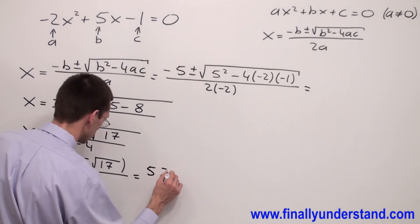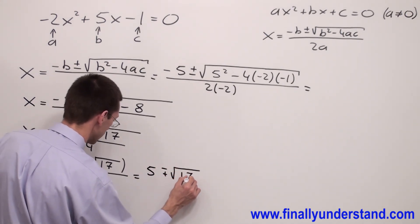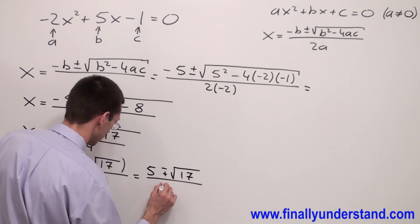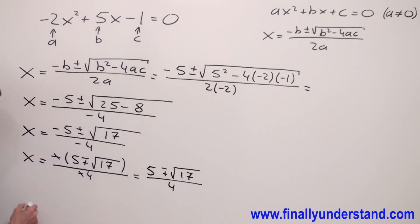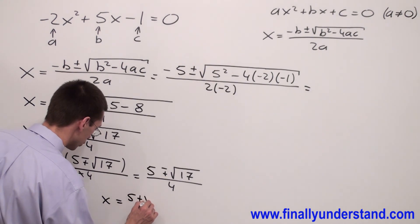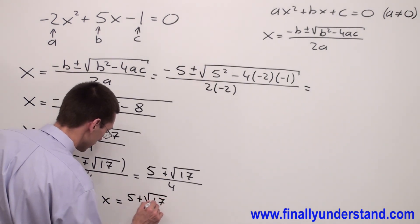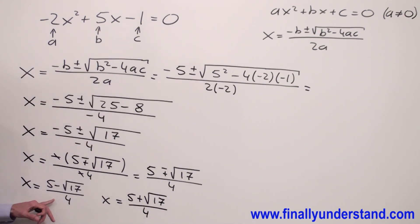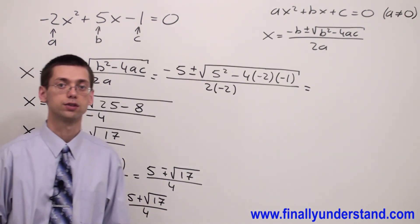So I can say that x equals 5 minus square root of 17 over 4, or x equals 5 plus square root of 17 over 4. And these are the solutions to my problem.